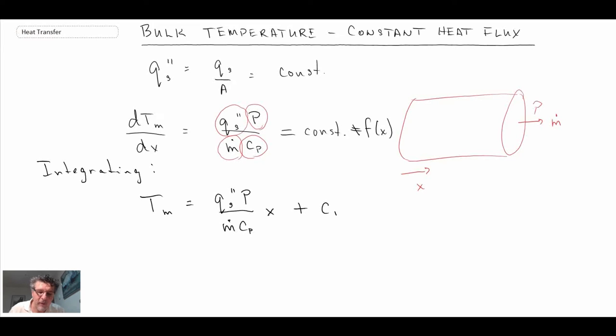And so what we need to do is we need to apply a boundary condition. We're going to say at x equals zero, the temperature is the bulk temperature on inlet TMI and that will be our boundary condition.